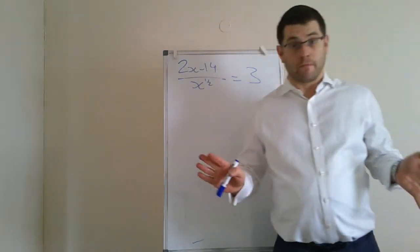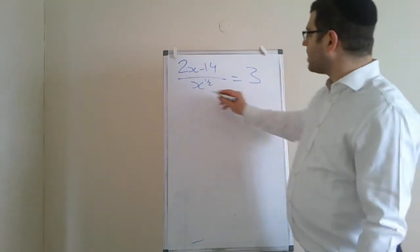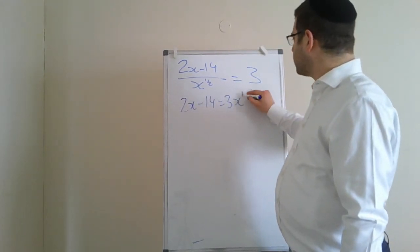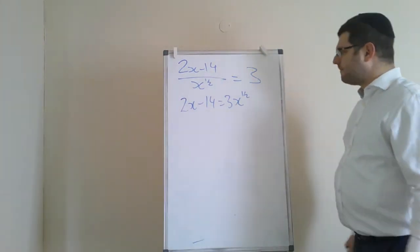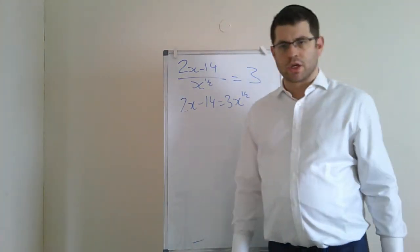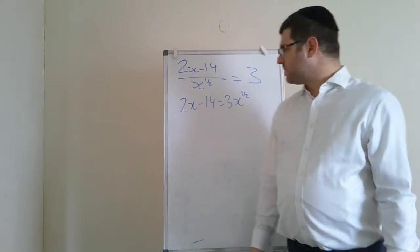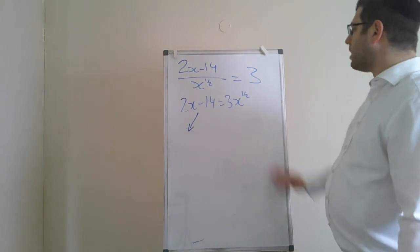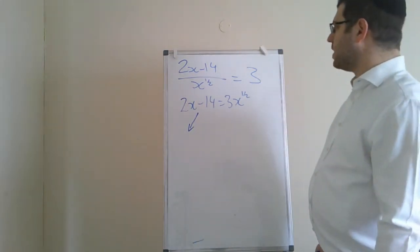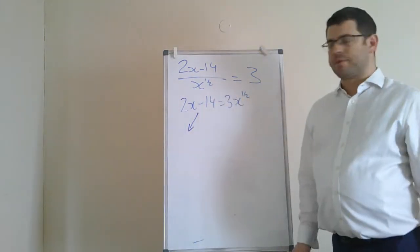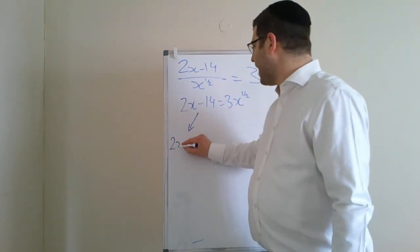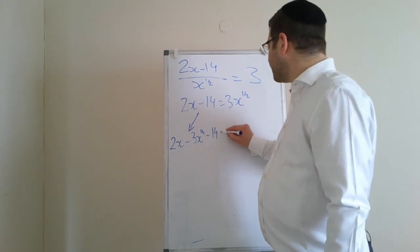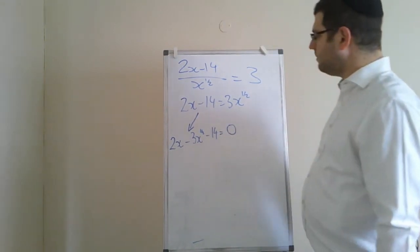Right, the logs have gone, so we just need to solve this equation. Let's bring the x to the half up. So I've got 2x minus 14 is 3x to the half. Now, how are we going to solve an equation like this? You've got two options. Let me show you both options. I'll do one option here and another option over there.